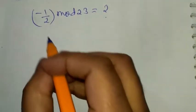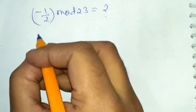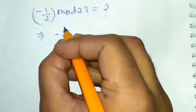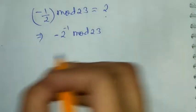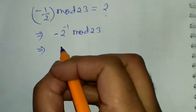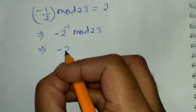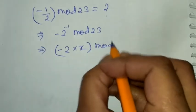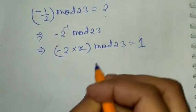Let's see one more example: minus 1 by 2 mod 23. This can be written as minus 2 inverse mod 23. This can be represented as minus 2 into x mod 23 is 1.